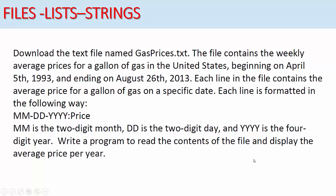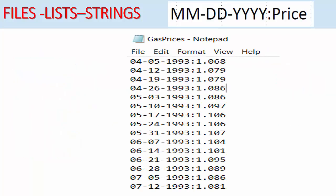This is a nice example that combines files, lists, and strings. In this example we are going to download a text file called gas_prices.txt. The file contains the weekly average prices of gallons of gas in the United States beginning in April 1993 and ending in August 2013. Each line in the file contains the average price of a gallon on a specific date, formatted as the date followed by a colon then the gas price.